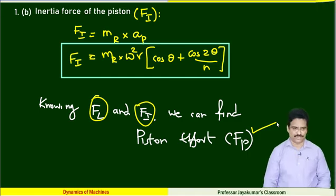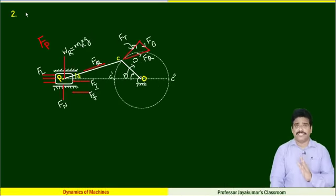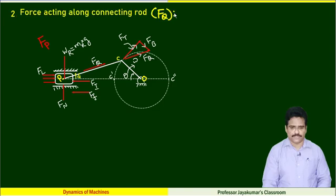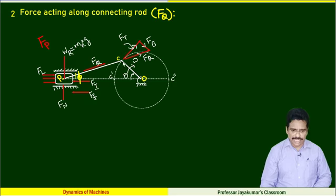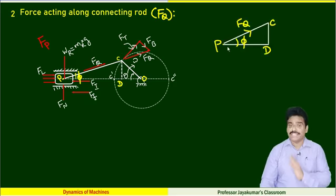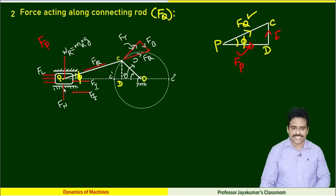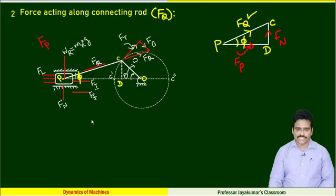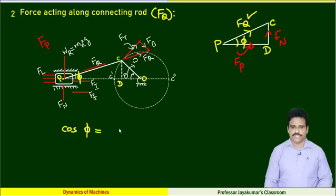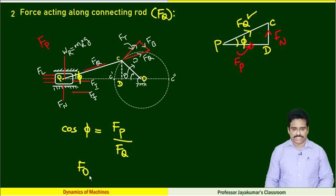Now let us find force acting along the connecting rod, which I call FQ. Let me draw a line perpendicular to this. From the right-angle triangle PCD, knowing the value of piston effort, we can find the other two components: FQ and the vertical component FN. I can write cos(phi) = FP / FQ, so FQ = FP / cos(phi).